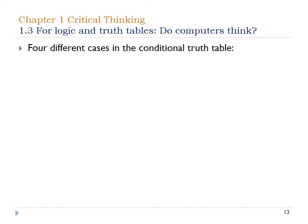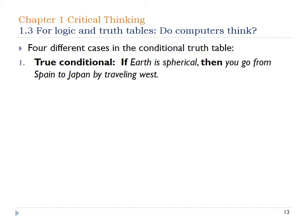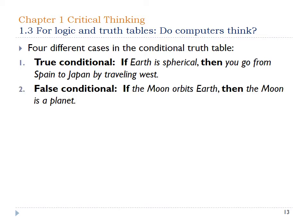Let's look at four different cases of the conditional truth table. The first is true: if the Earth is spherical, which is true, then you can go from Spain to Japan by traveling west. Both the premise and conclusion are true. The next one is false: if the Moon orbits the Earth — which is true — then the Moon is a planet, which is not true. It would make sense if the Earth were the center of the universe, but today the Sun is. The Moon orbits us, so it's not a planet.